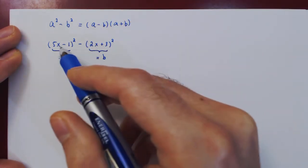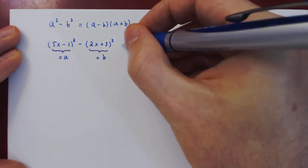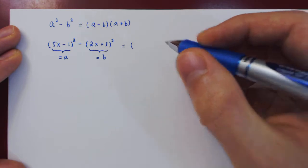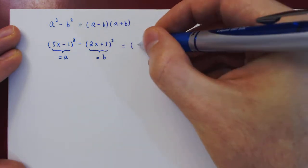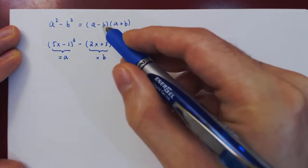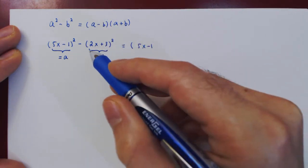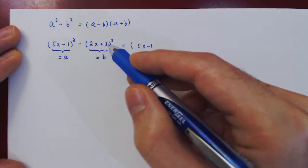So we can look at this as a squared minus b squared. And this factors, of course, as a minus b. So a, 5x minus 1, minus b, and here we have to be careful. All of b is being negated, so we will obtain negative 2x, negative 3.